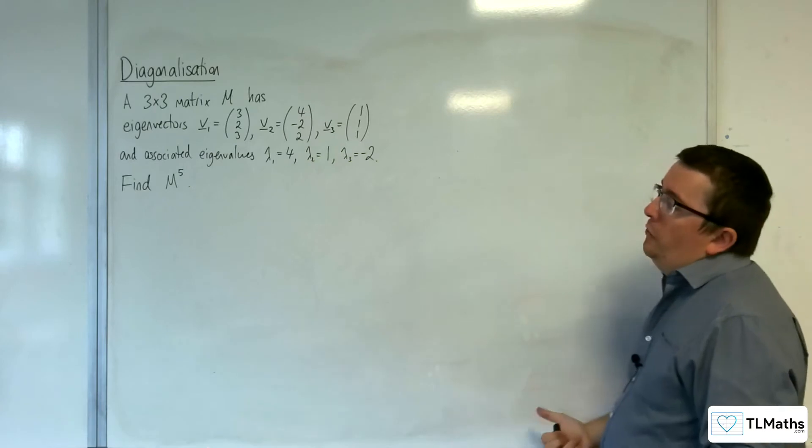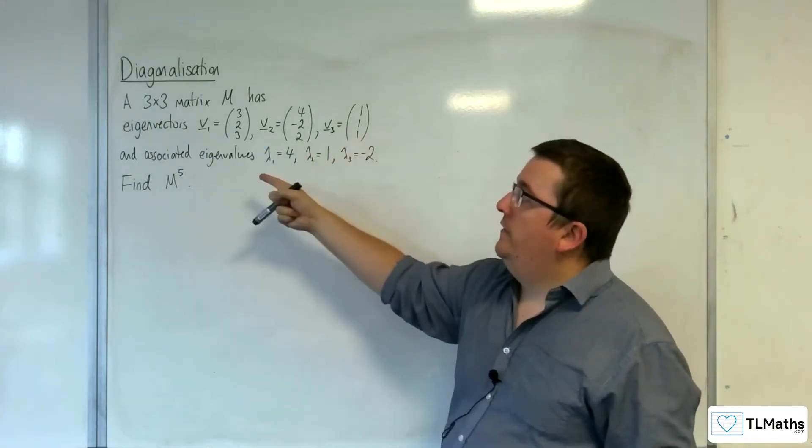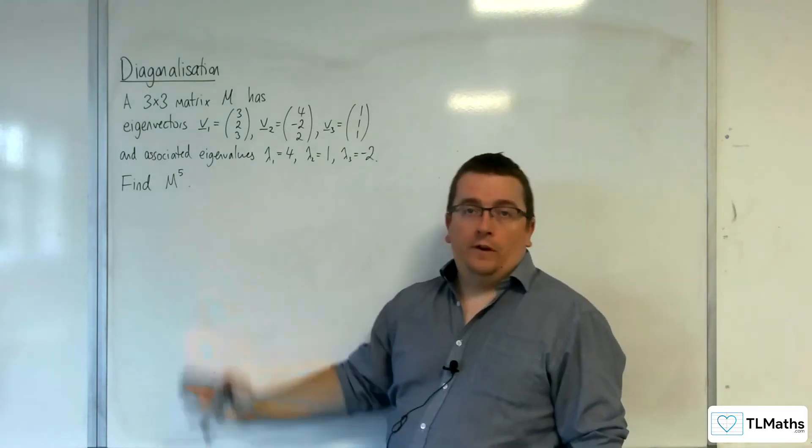In this video we've got a 3 by 3 matrix M. We've been told its eigenvectors and the associated eigenvalues, and our job is to find M to the power of 5.